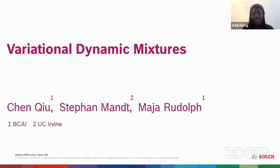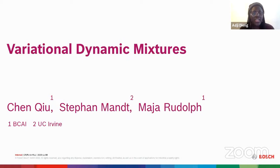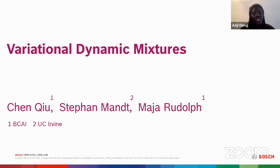Welcome to the second session for the third symposium on advances in approximate Bayesian inference. Today I am very thrilled to welcome Maya Rudolph, who is currently a research scientist at Bosch Center for AI. She develops deep latent variable models for sequential data and is interested in leveraging neural networks for flexibility in probabilistic models. She did very influential work during her PhD on extending embedding models to different types of data, and she got her bachelor in mathematics at MIT. Today she is going to talk about her recent work titled Variational Dynamic Mixtures.